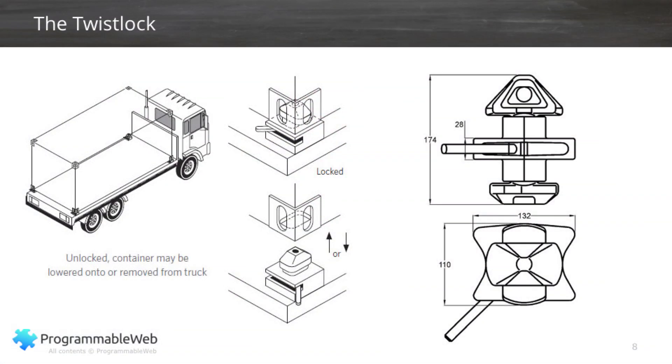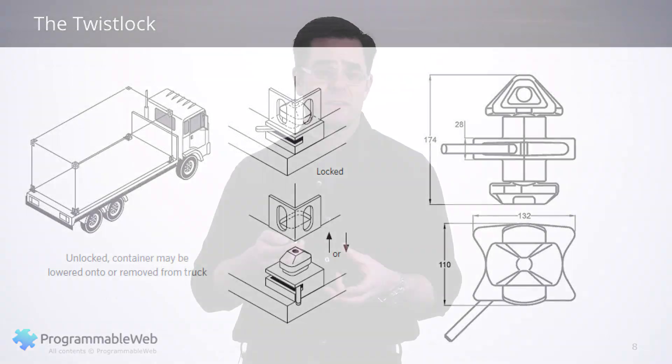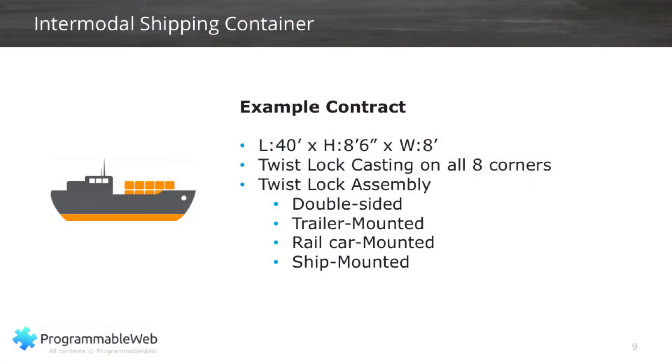This whole idea is very much based on a contract — these containers connect to everything: to each other, to rail cars, to tractor-trailer trucks, and to cargo ships. On all four corners of the container there's what's called a twist lock receptacle, and then you've got the actual twist lock assembly. These have very specific dimensions so they all fit together almost like Lego. The dimensions are really well understood for the containers themselves, the cargo ships, the rail cars, and the tractor-trailer trucks. The contract here is the size of the cargo container — 40 feet by 8 foot 6 by 8 — the twist lock casting which appears on all corners, and the assemblies, which can be single-sided, double-sided, trailer mounted, rail mounted, or cargo ship mounted. They all understand this contract. The provider is the provider of transportation — the rail car, the cargo ship, the tractor-trailer truck — and the consumer is the container.